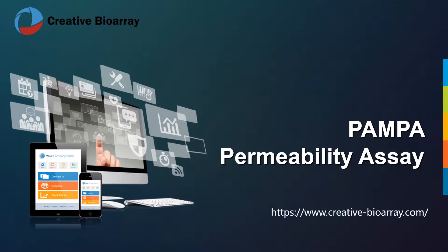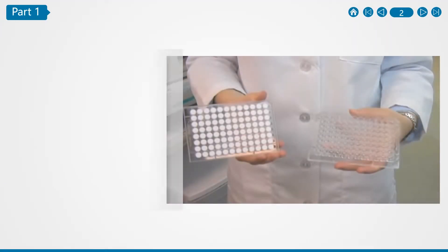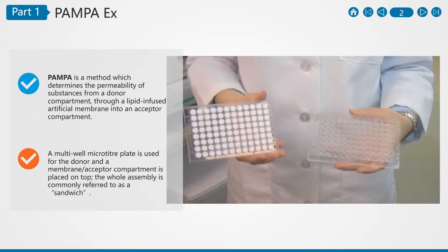Permeability is an important physiochemical property of a drug, governing the availability of the drug in the systemic circulation. PAMPA is a method that determines the permeability of substances from a donor compartment through a lipid-infused artificial membrane into an acceptor compartment.